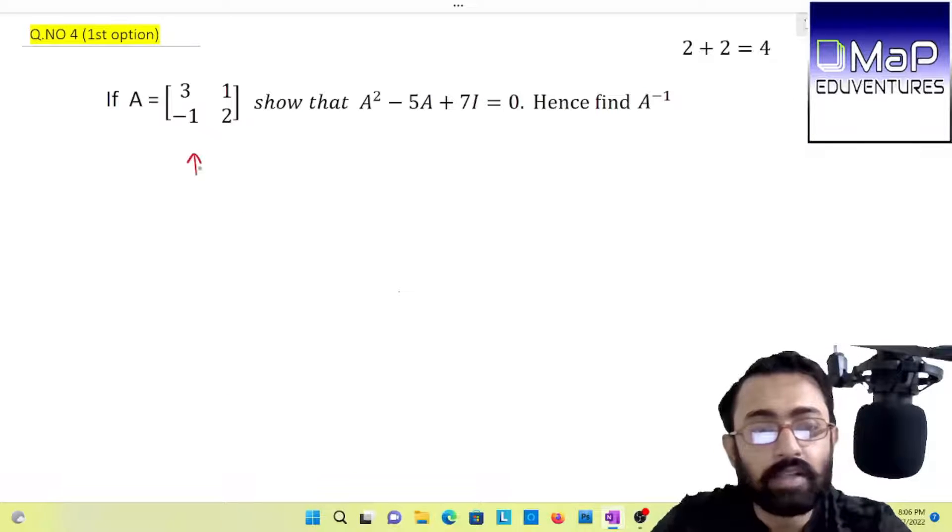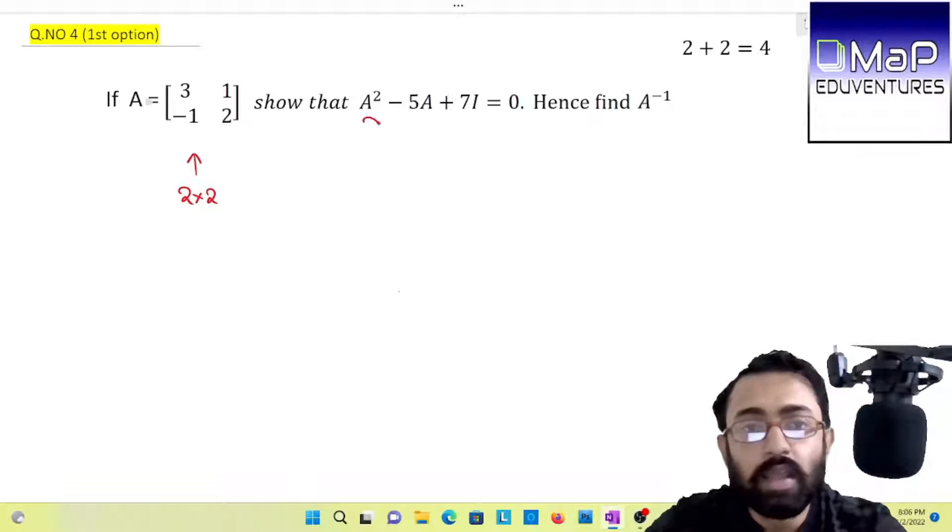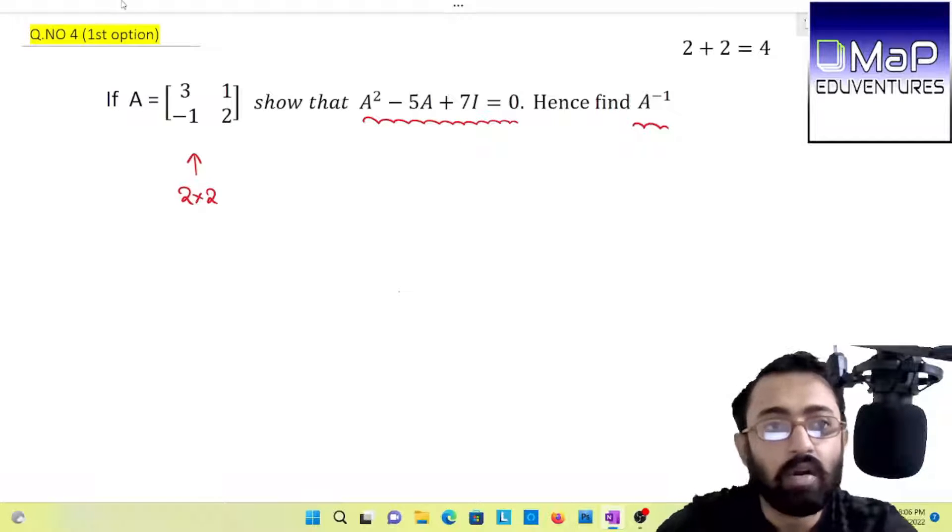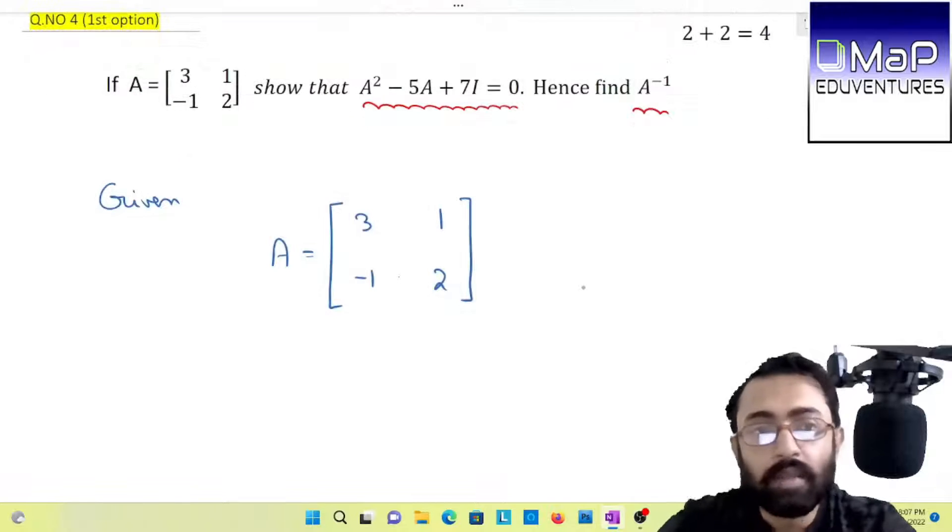Now let us go to the next question. It's a 3 mark question. A matrix of 2 cross 2 and we are to show that A square minus 5A plus 7I, which is obviously the identity matrix, is equals to zero matrix, and hence find A inverse.